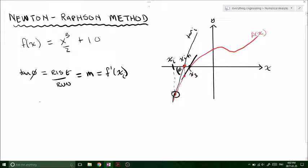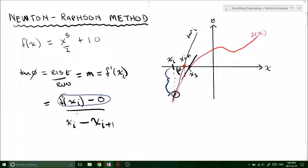So we can evaluate our rise over run to be f of xi minus 0, the height, just the height, the rise minus the run, our horizontal distance, which will be this distance. So that equals f prime of xi.